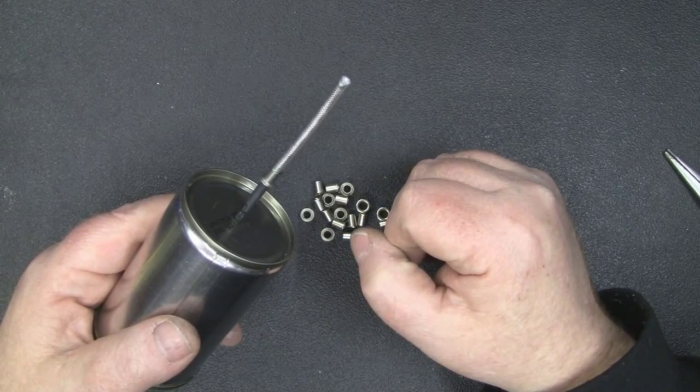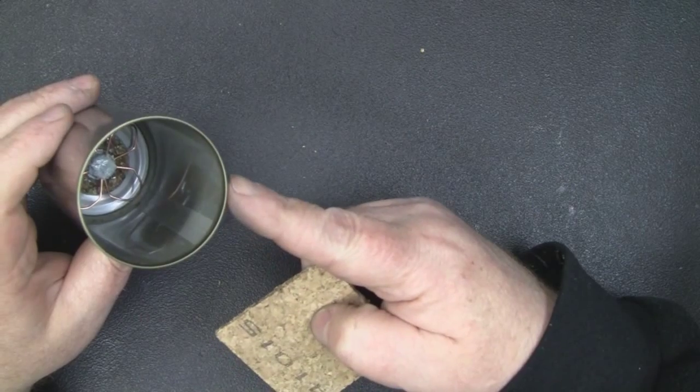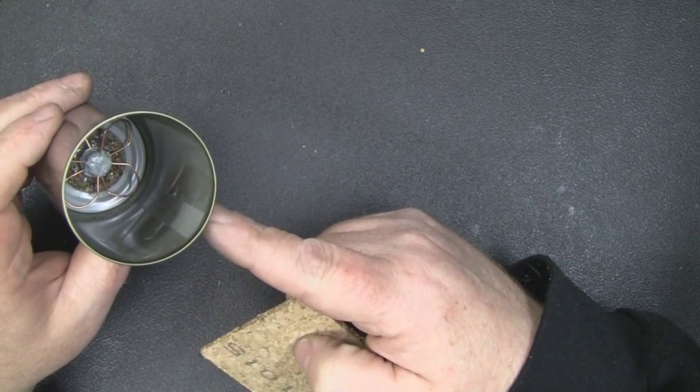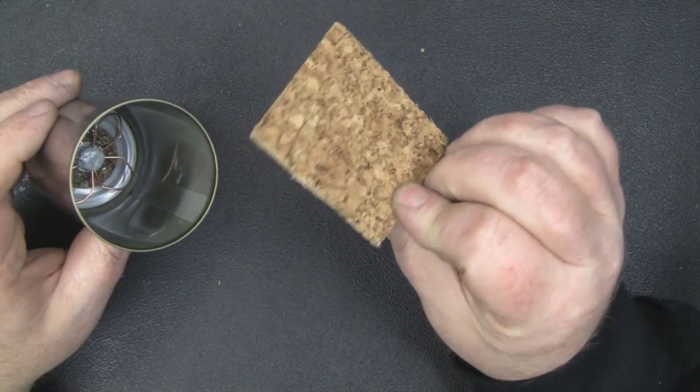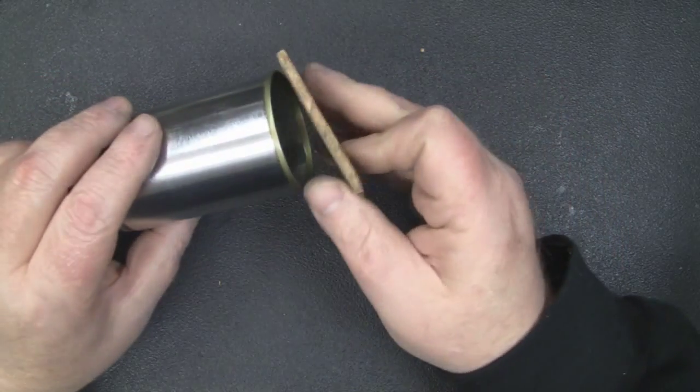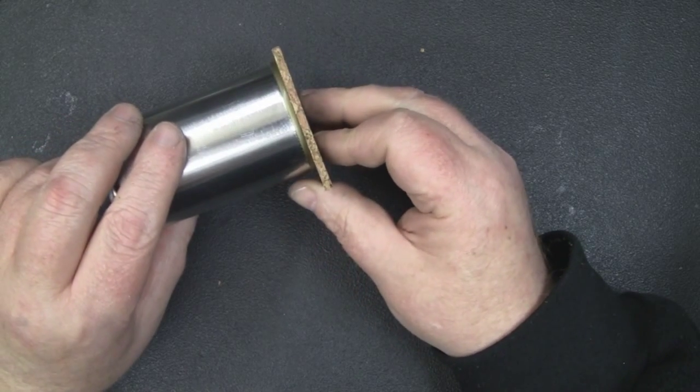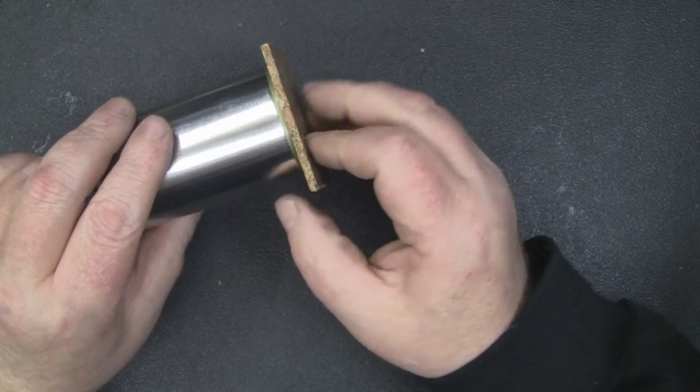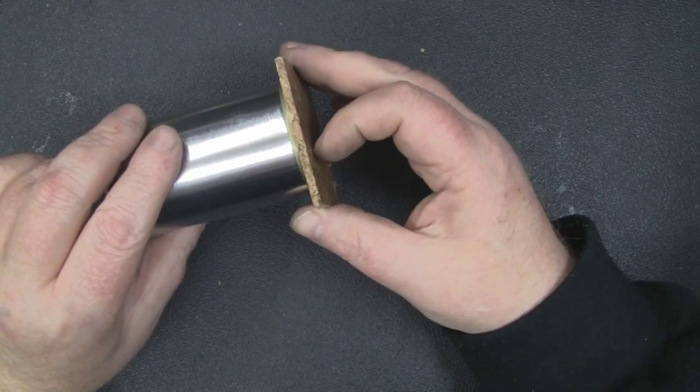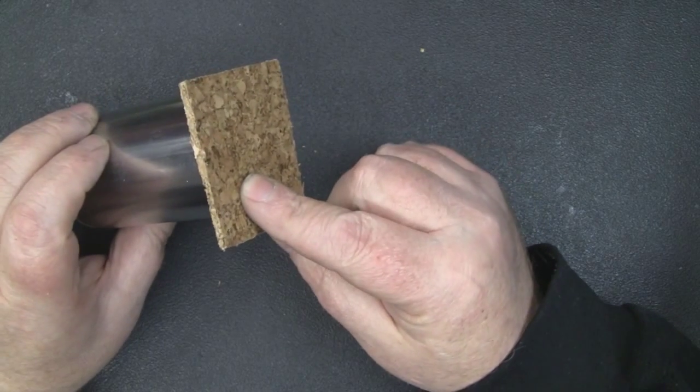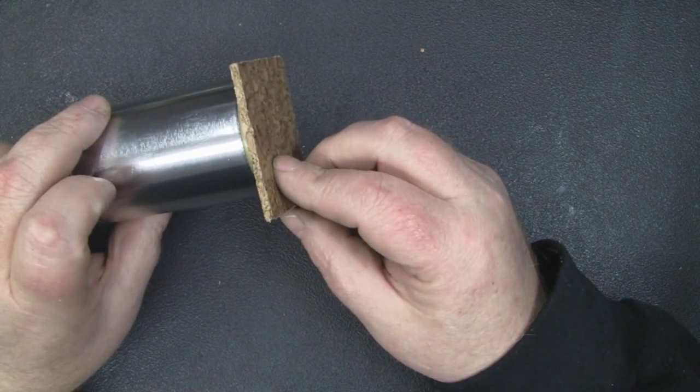To close this end of the waveguide off and ultimately protect the element inside, I've got some cork matting here, it's about two millimeters thick, and I'm just going to epoxy that onto the can itself, then get a sharp knife and cut around it using the can as a sort of jig or guide, and a little bit of sandpaper, then we'll paint that when we paint the outside of the can itself.